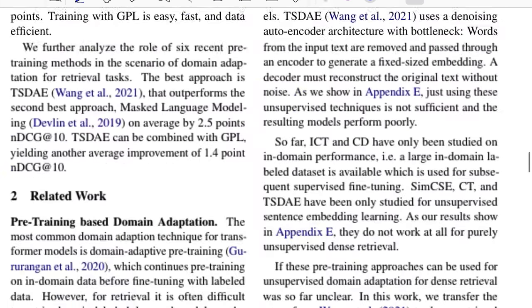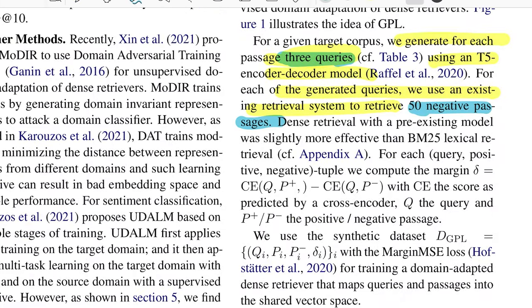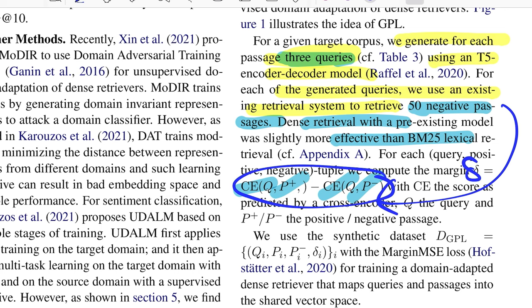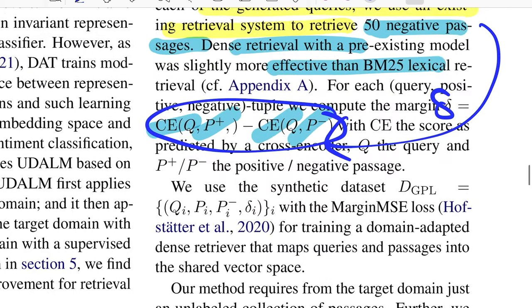Once that is done, they experimented with BM25 based retrieval, but eventually they found like the dense retrieval was working slightly better than that. And then you jump on the cross encoders step where they calculate the relevance score for every query and positive pair and query and all the negative pairs which account for 50 such cases. And you take the difference of this, which they call as delta. And this loss is what they call as margin MSE loss, margin mean squared error loss.